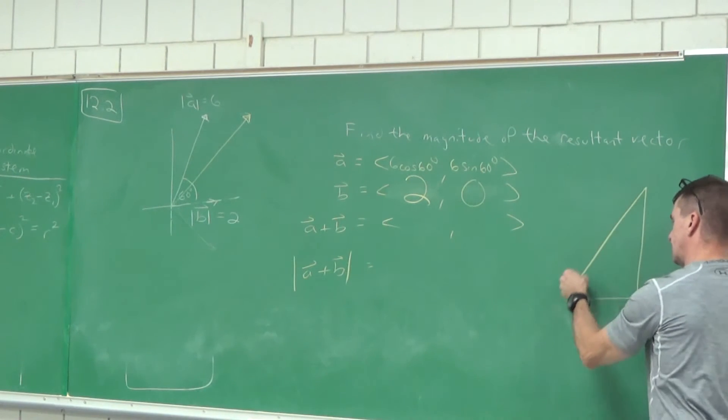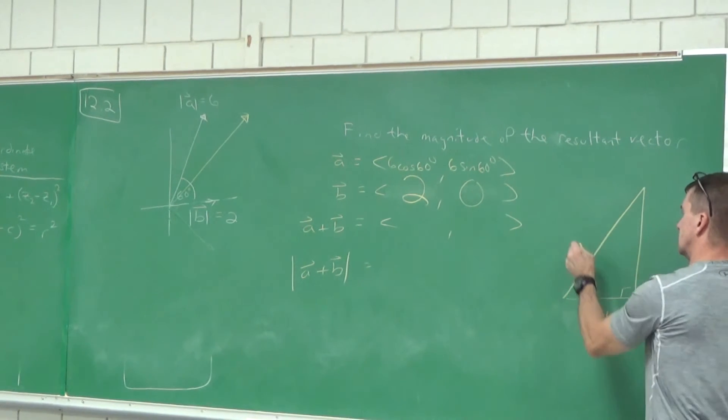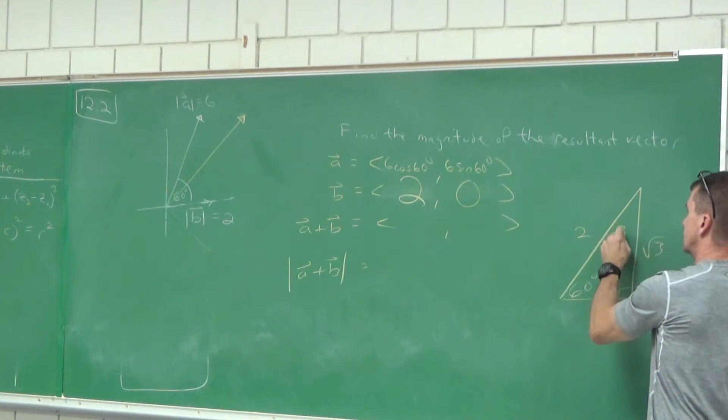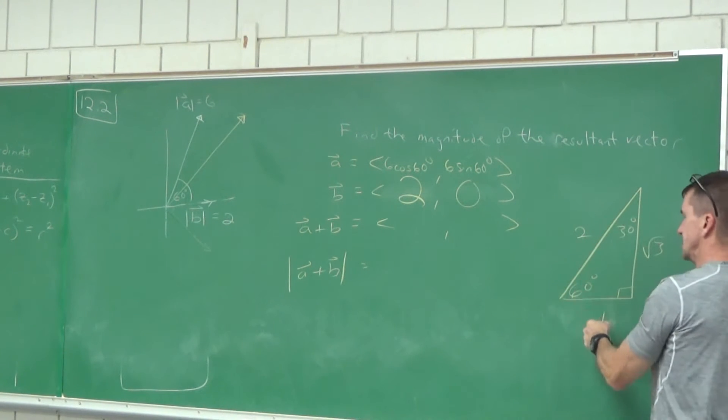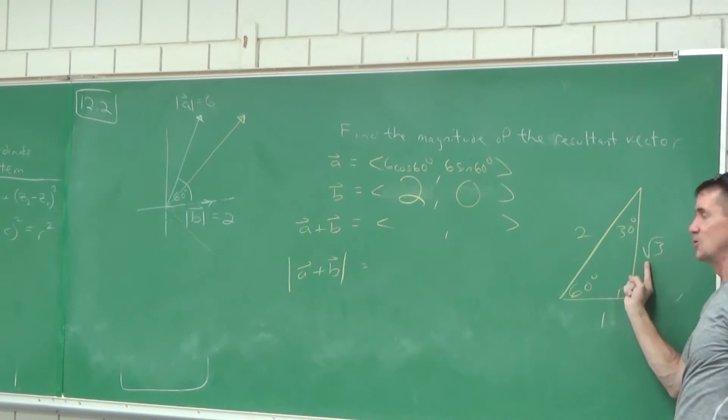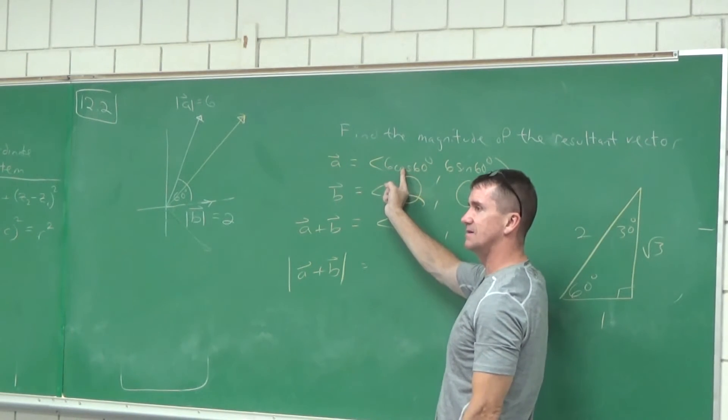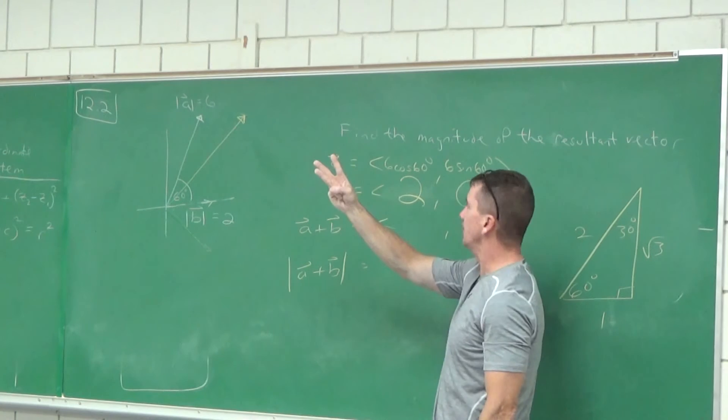I'll draw it. Don't worry. Here's that special right triangle. We know when that's 60, this is on the trig sheet. The cosine of 60 is the what? Perfect, one half. The sine of 60 is the three over two. So six times a half is what? Three.